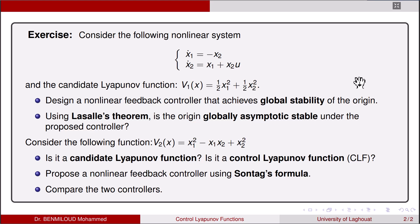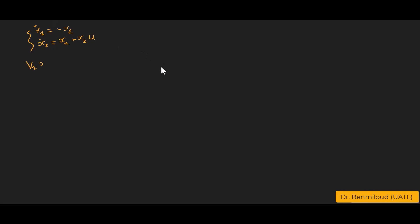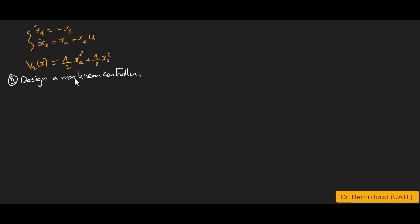Let us move to the solution of this exercise. Consider the nonlinear system where x₁̇ = -x₂ and x₂̇ = x₁ + x₂·u, and the candidate Lyapunov function v₁(x) = ½x₁² + ½x₂². The first question is to design a nonlinear controller. We would like to propose a nonlinear feedback controller that achieves global stability, meaning V̇(x) ≤ 0 for all x ∈ ℝ².